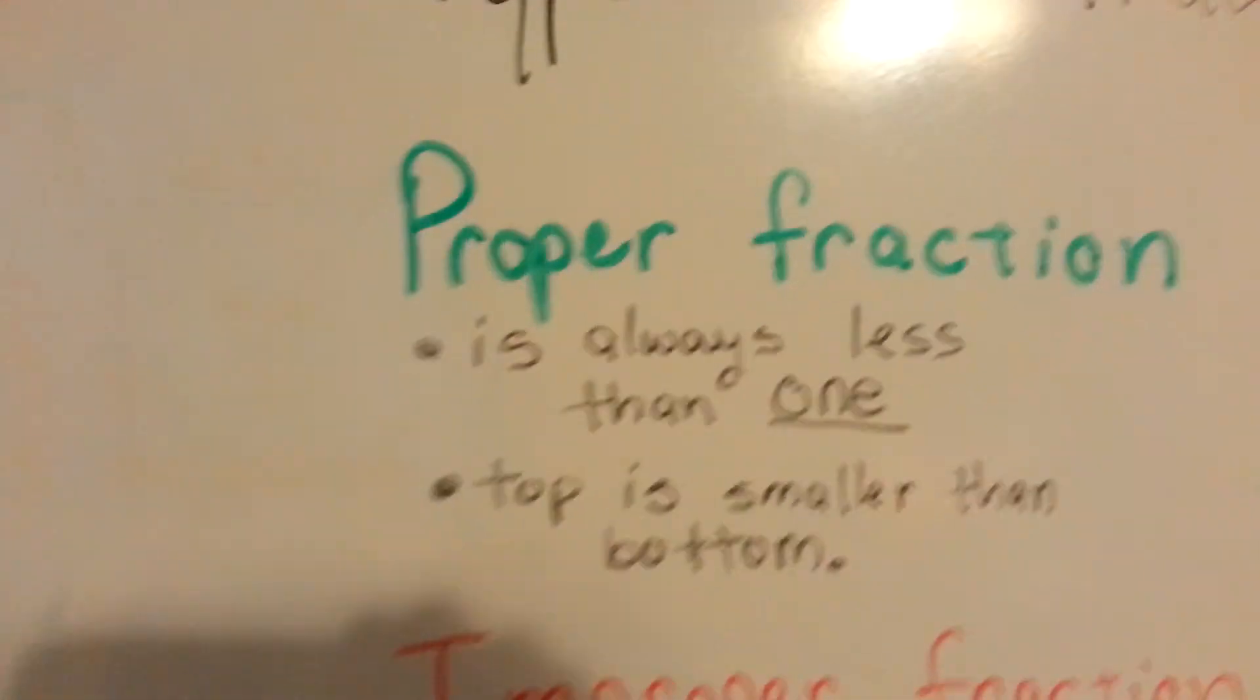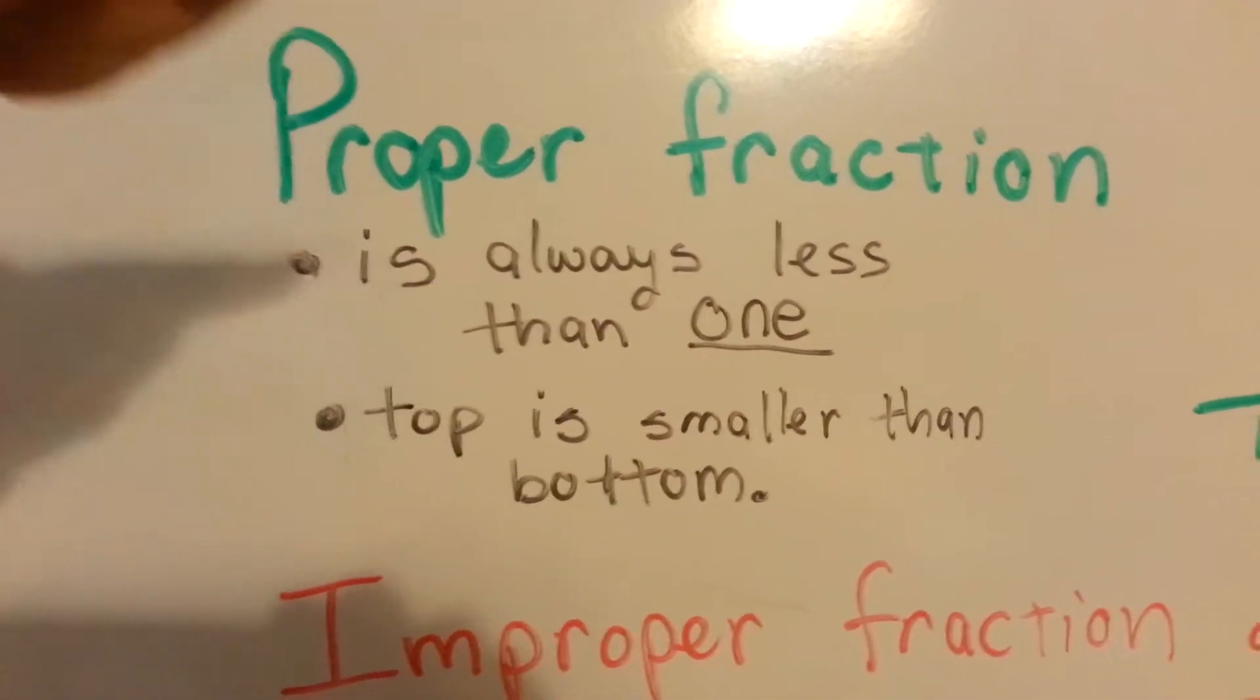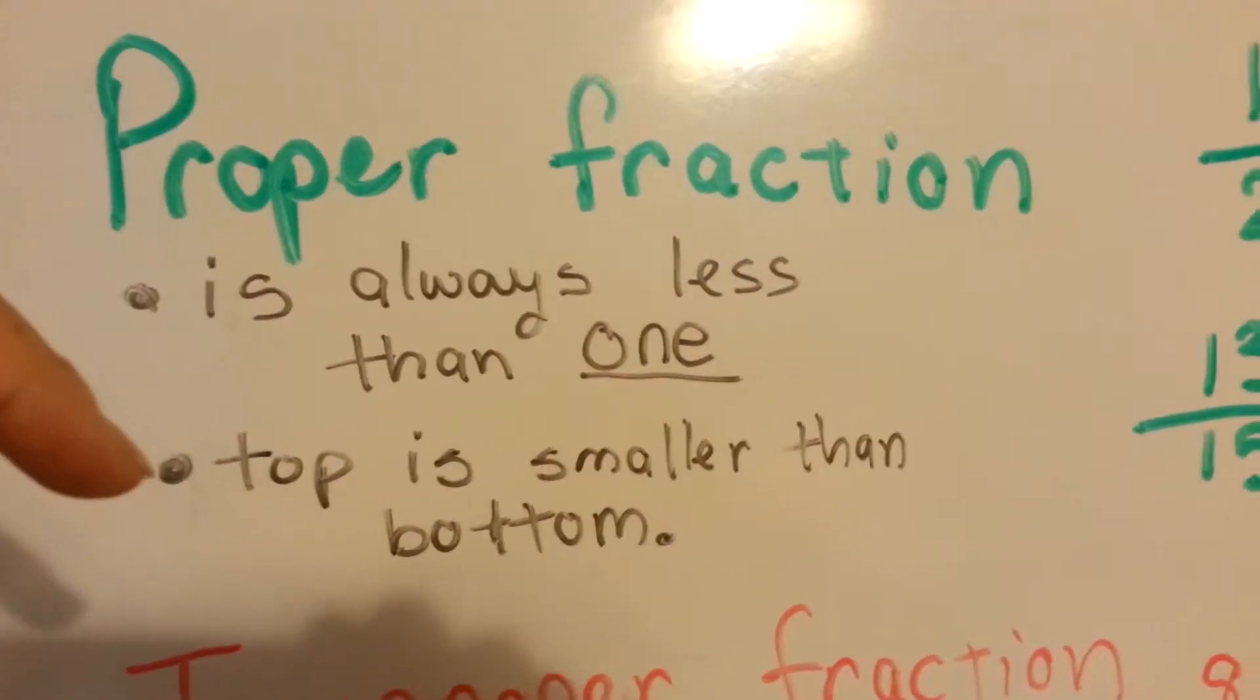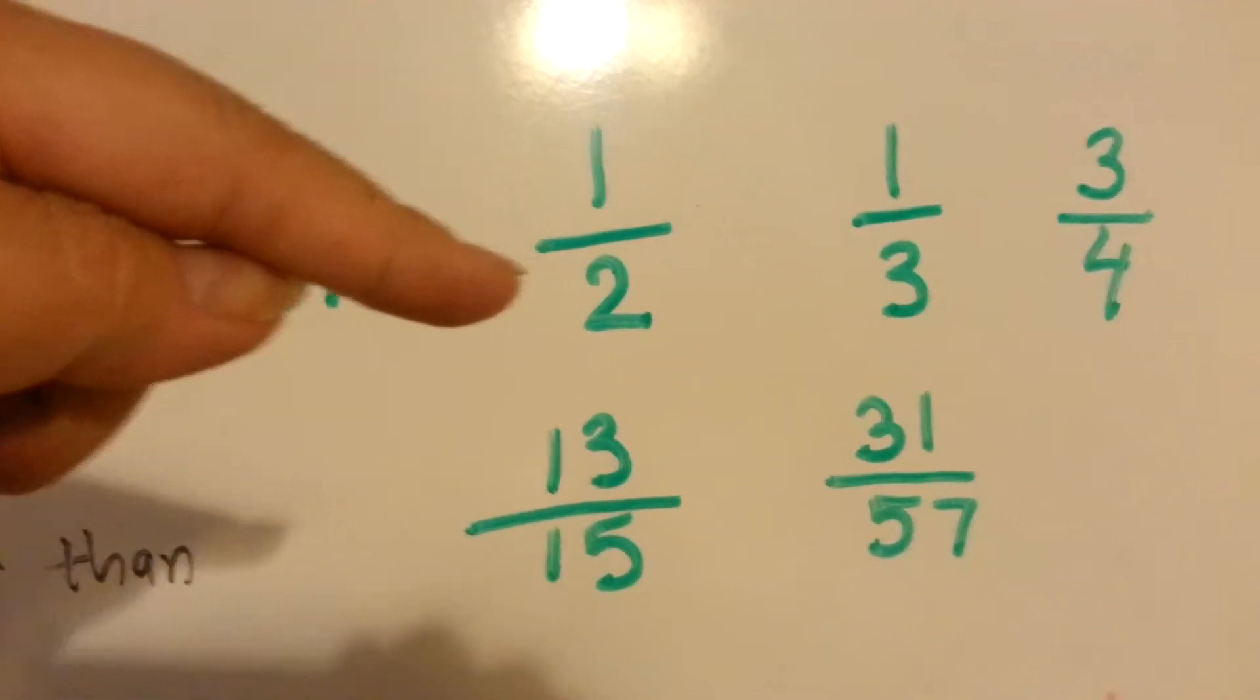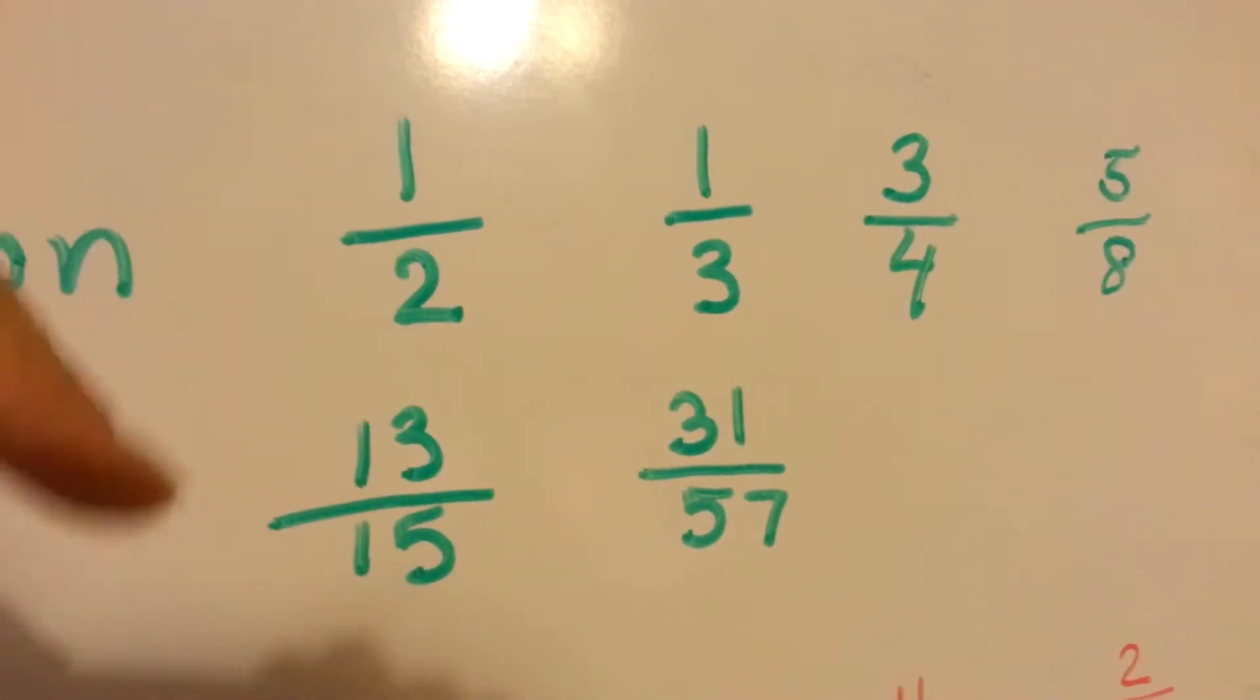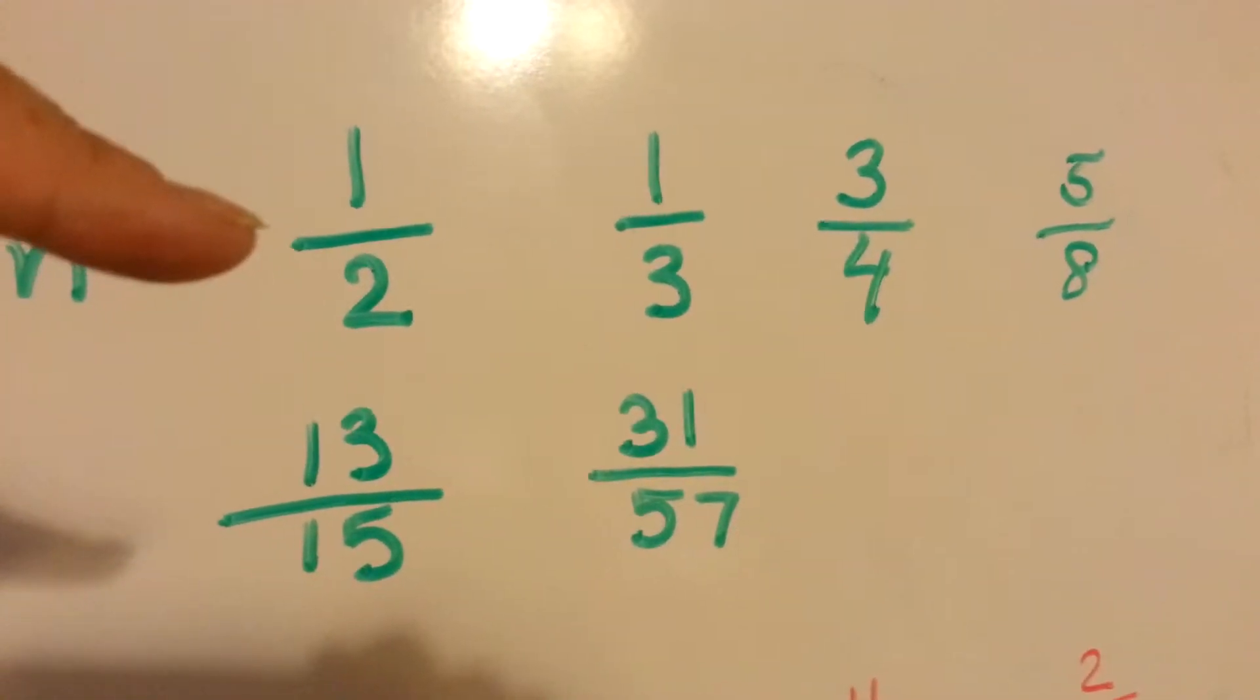So the first type of fraction is a proper fraction. What we know about it is they're always less than one, and the top is always smaller than the bottom. The numerator is always smaller than the denominator. All of these numbers here are less than one. If you have half of something, that's not one. It's smaller than one.